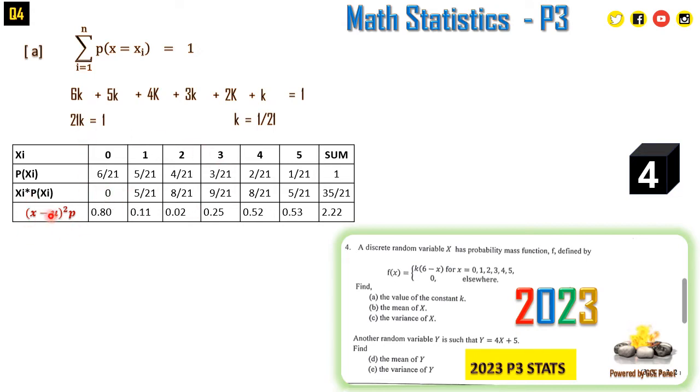To find the mean, the mean is defined as the sum of all variables times their probabilities. So we have 0 × 6/21 + 1 × 5/21 + 2 × 4/21, and we sum all of these. The expectation, E(X) or X bar, is given by the summation from i = 1 to n of xi times p(xi). The sum will be 35/21, which equals 1.67.